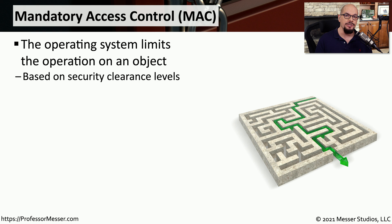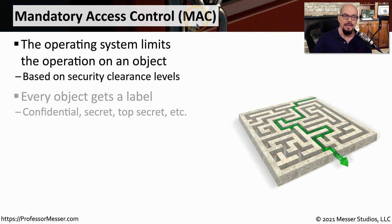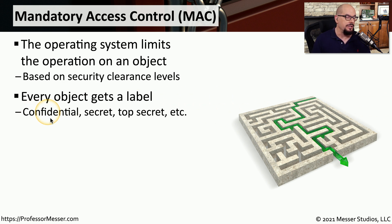If you work for a highly secure organization or some type of government, then you may be using mandatory access control, or MAC. This requires you to configure separate security clearance levels and then associate objects in the operating system with one of those security levels. Every object you'd be working with — a spreadsheet, a presentation, or a word processing document — gets a security label such as confidential, secret, or top secret.